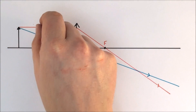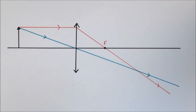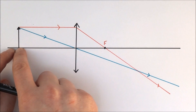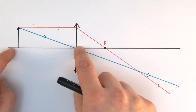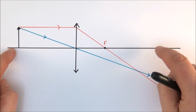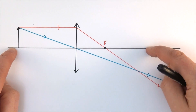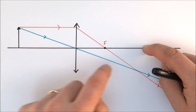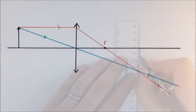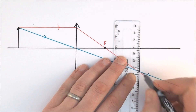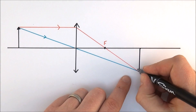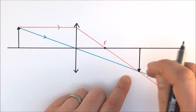In addition to the rays from the top of the object, there are also rays coming off the bottom. Rays from the bottom move through the lens and just keep going along the principal axis, so that's where the bottom of the image will be. The top of the image is where the rays of light cross over.